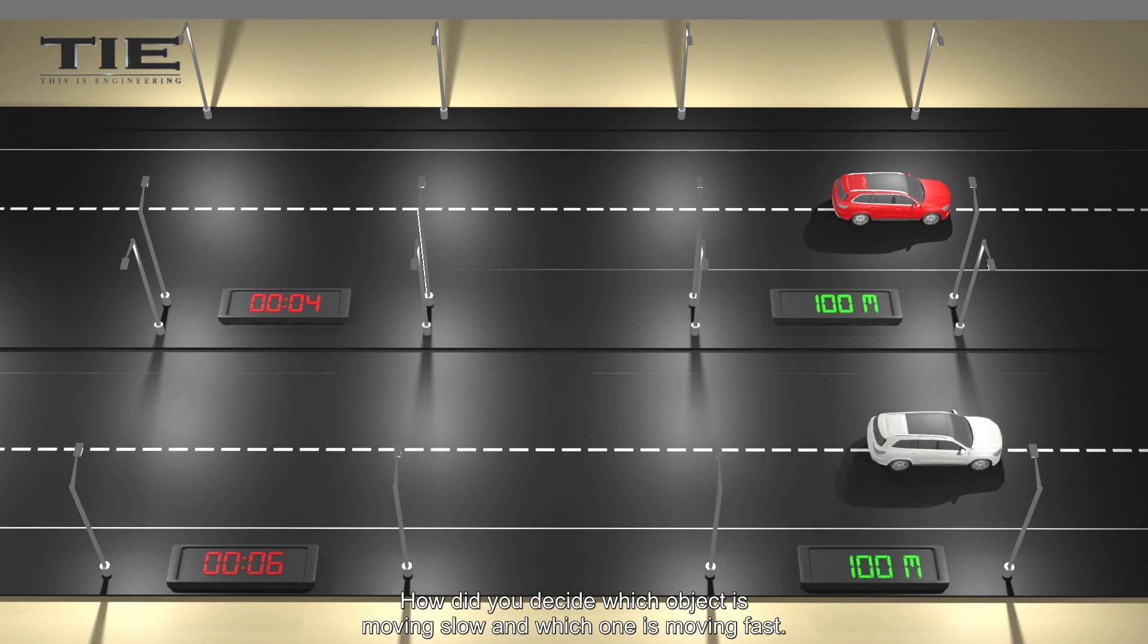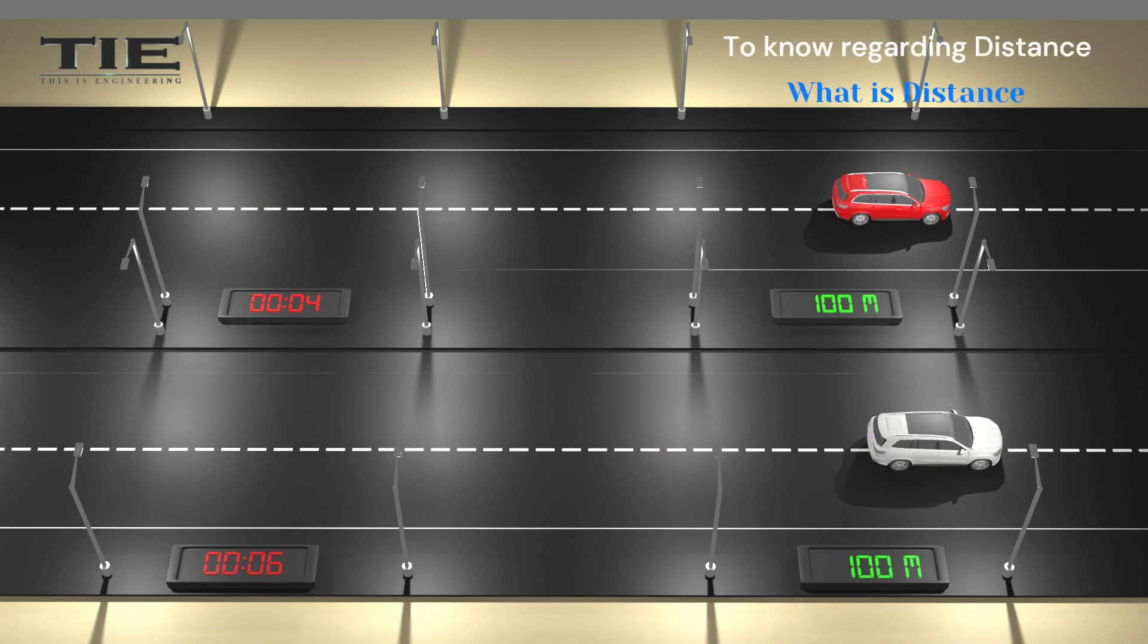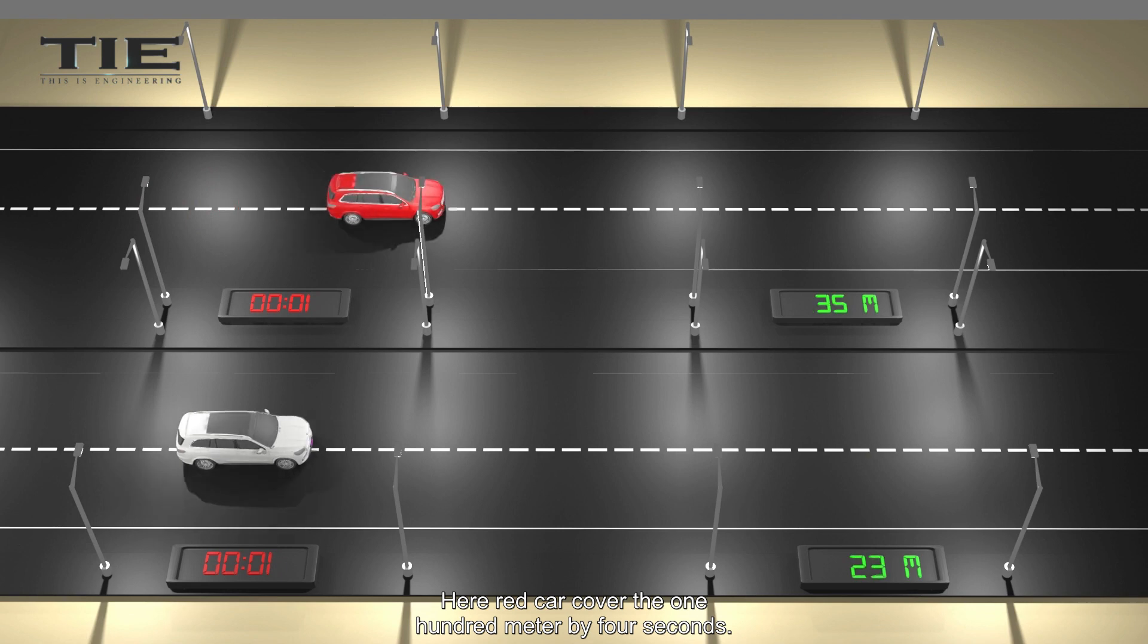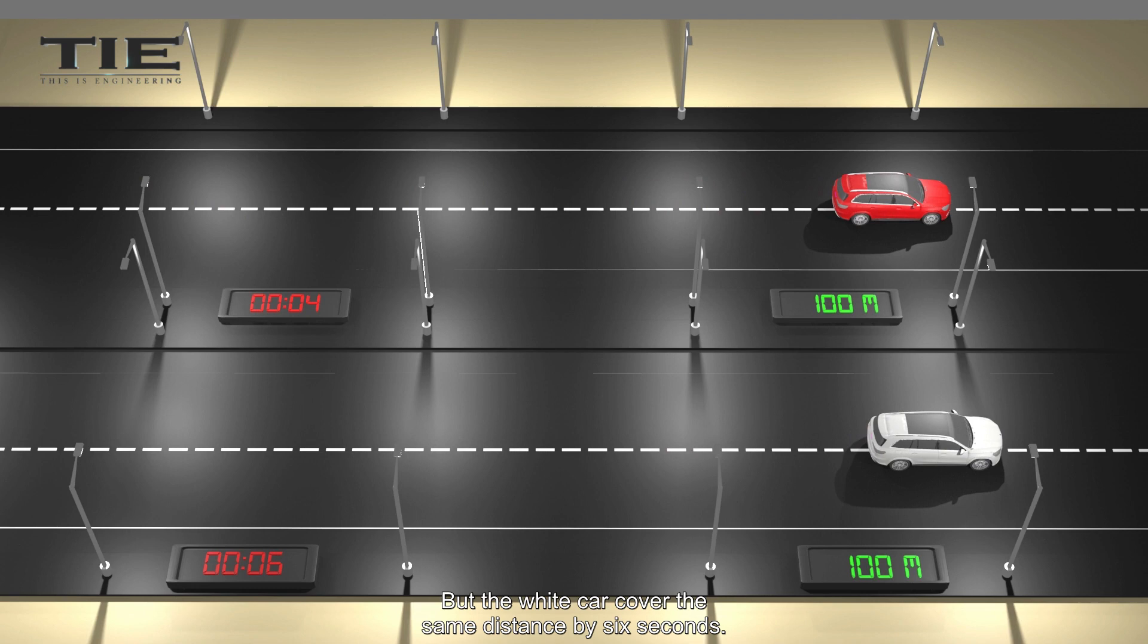How did you decide which object is moving slow and which one is moving fast? The time taken to move by objects in a given distance can help us to decide which one is faster or slower. Here, red car cover the 100 meter by 4 seconds. But the white car cover the same distance by 6 seconds. So the distance is same, but taken time is different.